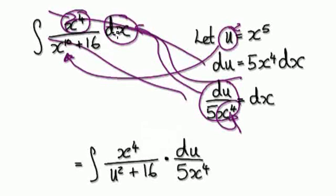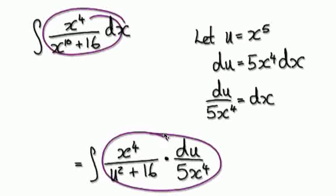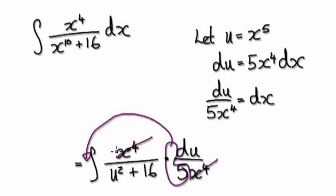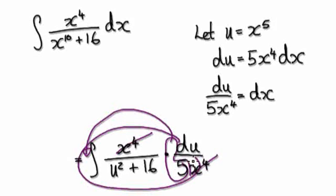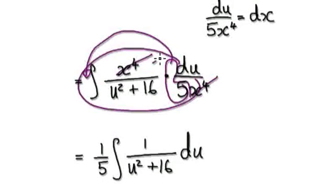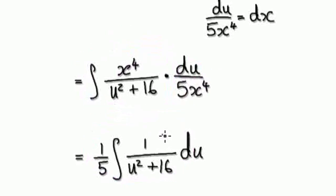We'll put everything in there, and then this whole thing here will then become this. Now once you're here, this will cancel out with this. Factor out the 1 over 5, because it's a constant, so take it out. Then this whole thing here will then become this.